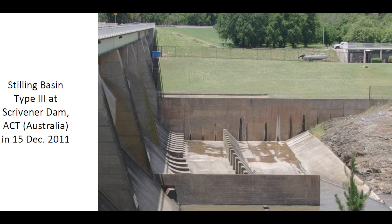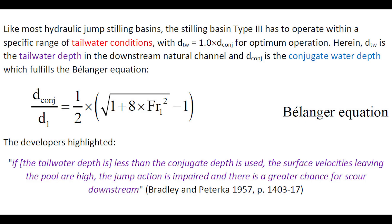One example of a Stilling Basin Type III is shown here. Like most hydraulic jump stilling basins, the Stilling Basin Type III has to operate within a specific range of tailwater conditions, with optimum operation when the tailwater depth equals the conjugate depth. The tailwater depth is the downstream depth in the natural channel, and the conjugate depth is the one which fulfills the Bélanger equation shown here.